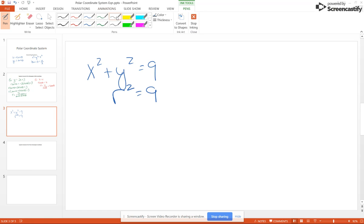What if we had Y equals 6? Well, Y is R sine theta, so once again you solve for R. You get R equals 6 over sine theta, and that would be 6 cosecant theta if you wish to change it to that.